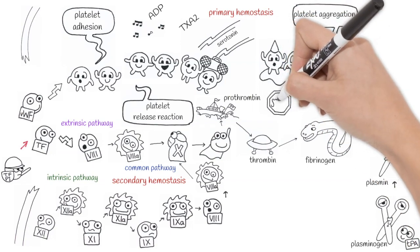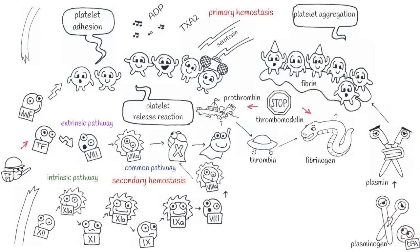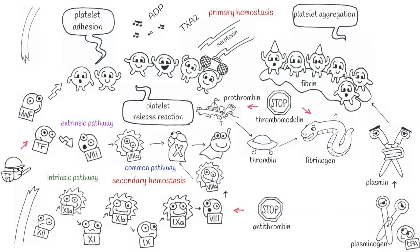Then there is thrombomodulin that inhibits the transformation of prothrombin into thrombin and of fibrinogen into fibrin. And then there is also antithrombin that inhibits both the extrinsic and the common pathway.